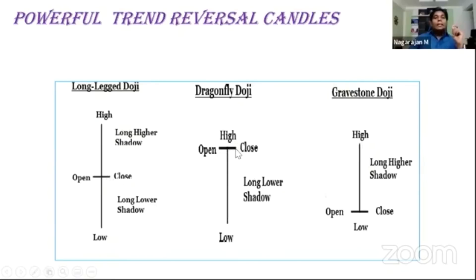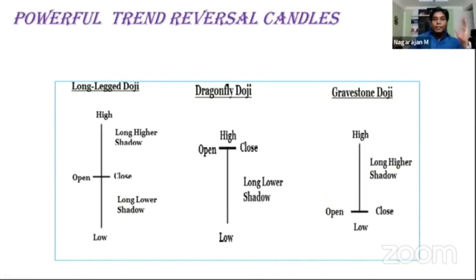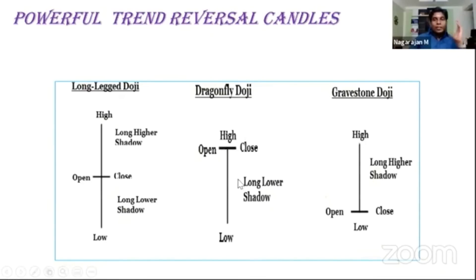The dragonfly doji comes when buyers are in control. The stock opened at 100, went all the way down to 80, but buyers came in with huge quantity and pushed the price back up, closing at or near the high, like 101 or higher. The sellers did not get control — buyers drove the price from the low all the way back up to a high close. That is where the dragonfly doji comes into picture.